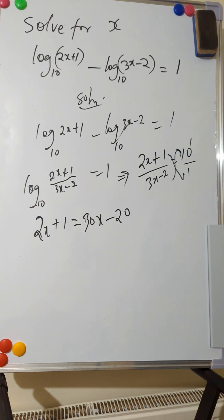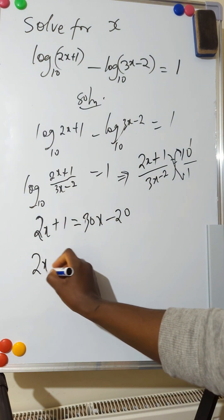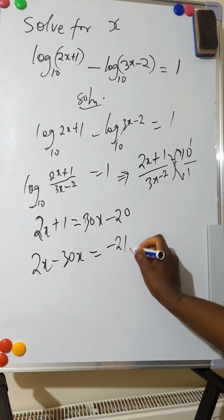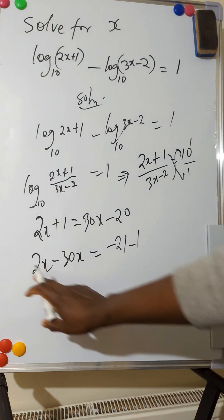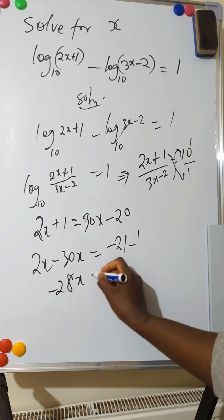At this point, you collect like terms. Let all the x be on this side. So we have 2x minus 30x equals minus 20 minus 1. 2x minus 30x is minus 28x, which equals...